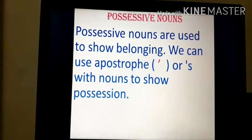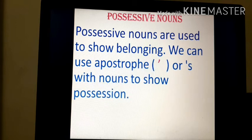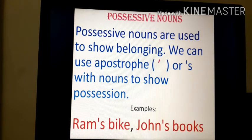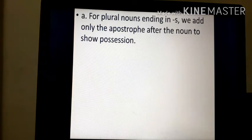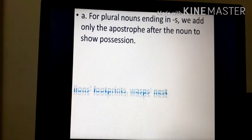Now we'll study about possessive nouns. Possessive nouns are used to show belonging. We can use apostrophe or apostrophe s with nouns to show possession or belongingness. For example: Ram's bike — the bike belongs to Ram. John's books — those books belong to the boy named John. For plural nouns ending in s, we add only the apostrophe after the noun to show possession.